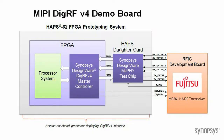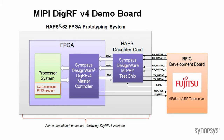Let's first take a look at the block diagram of the system we are showing today. This block diagram illustrates a typical mobile SOC implementation for interfacing with an RFIC using the MIPI DIGAR FV4 protocol. In this example, we'll see the sequence of events in a communication between the baseband side and the RFIC. The baseband initiates communication by requesting transmission of an ICLC command called ping request.